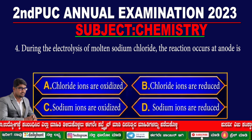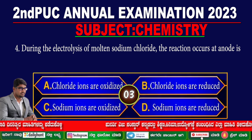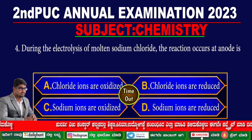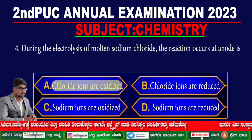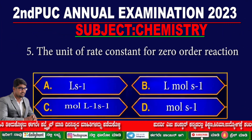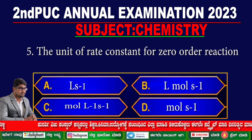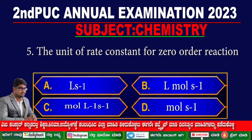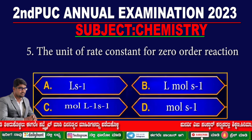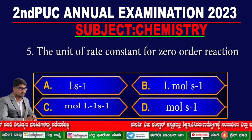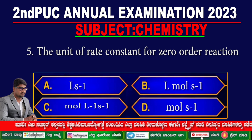Your time starts now. The correct answer is: chloride ions are oxidized. Question 5. The unit of rate constant for a zero order reaction — option A: L·s⁻¹, option B: mol·s⁻¹, option C: mol·L⁻¹·s⁻¹, option D: mol·s⁻¹.